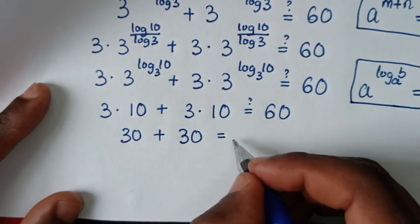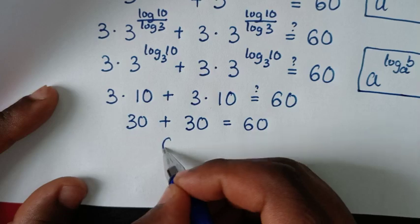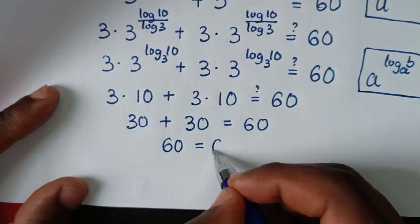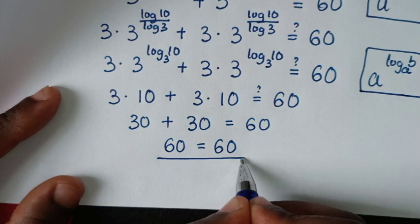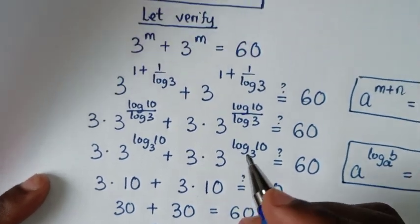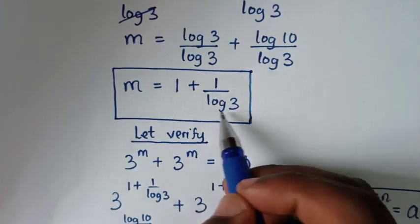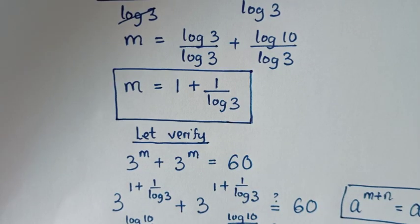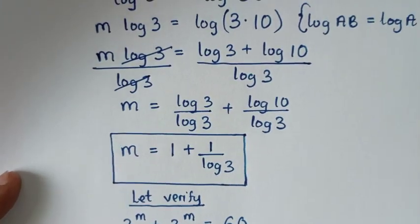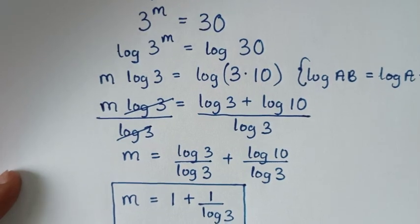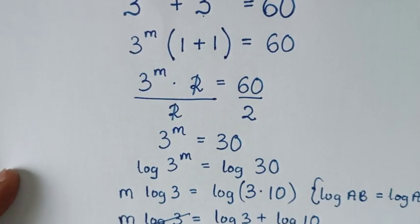That gives us 30 plus 30, which equals 60. So left side equals right side — it is true. The value of m is 1 plus 1 over log of 3. Thank you, don't forget to subscribe to the channel, and see you in the next video. Bye bye.